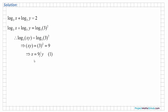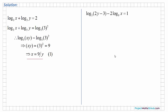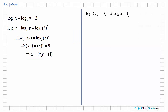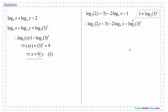So we can write that xy is equal to 3 squared, or 9. Cross multiplying, we get x is equal to 9 over y. Now let's consider the second equation. Once again we need to convert this equation to an equation in x and y only. We see the 1 on the right hand side, so from page 21 we can say that 1 is the same as the log of 3 to the power of 1 to the base of 3.